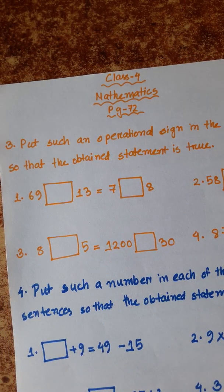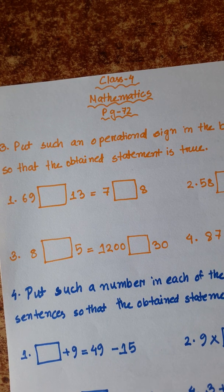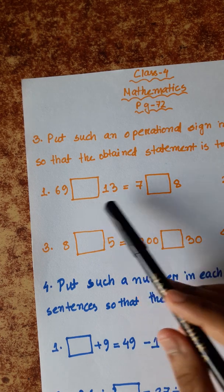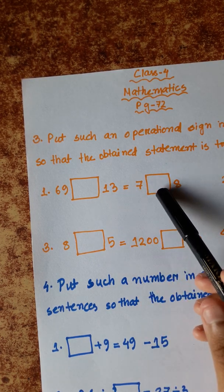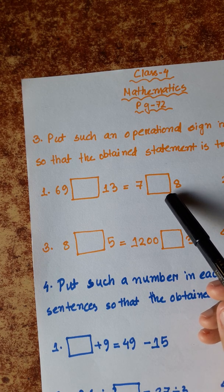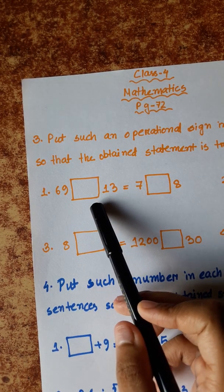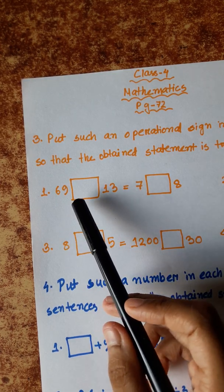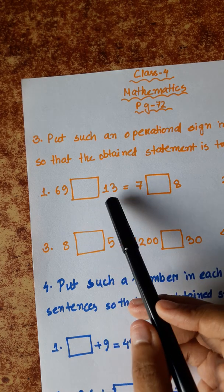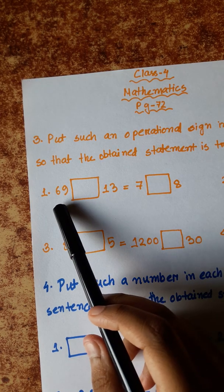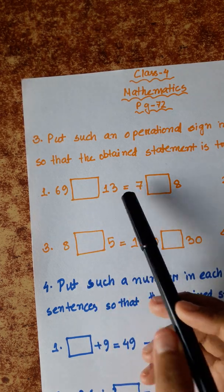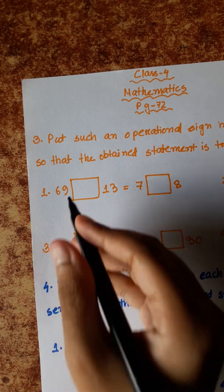Number 3: Put such an operational sign in the blank boxes so that the obtained statement is true. We have 7 into 56, and 56 equals 56 — using plus or minus. If we use plus we get 56, and 9 minus 3 is 6, 6 minus 1 is 5, using minus gives 56.